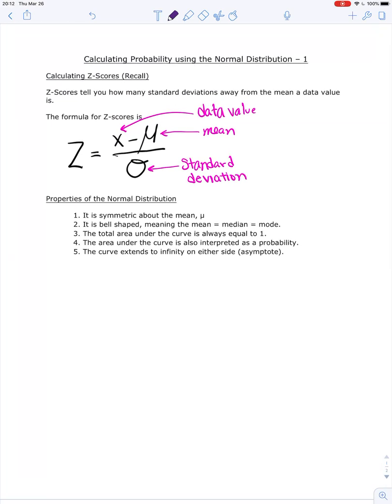so if I get a z-score of 1.2, that means my data value, whatever that data value is that I was looking at, is 1.2 standard deviations above the mean.